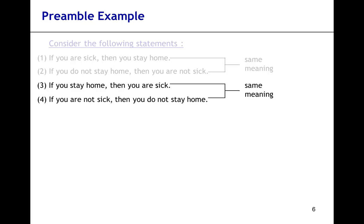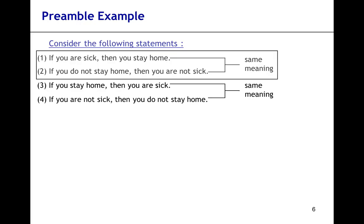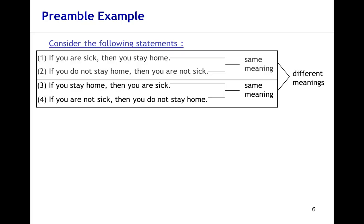Now, bringing back all four statements: we understand that one and two have the same meaning, and three and four have the same meaning. We have also discovered that one and three have different meanings. So we can conclude that one and two are different from three and four.